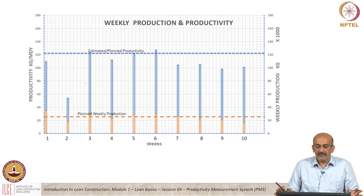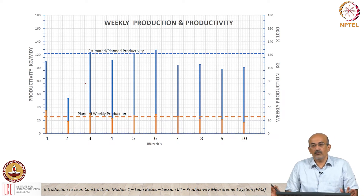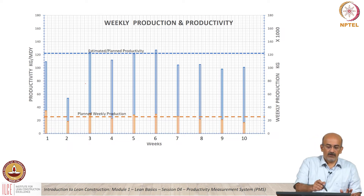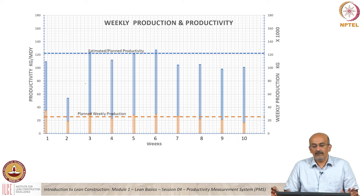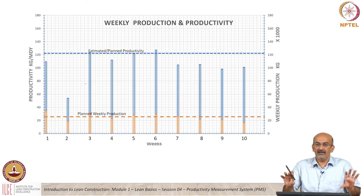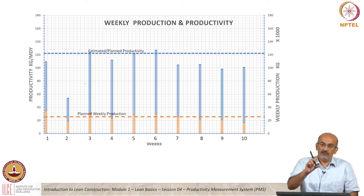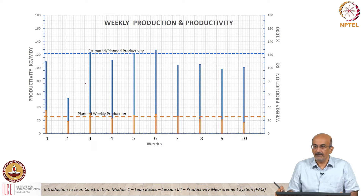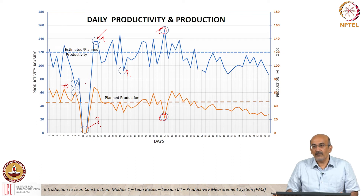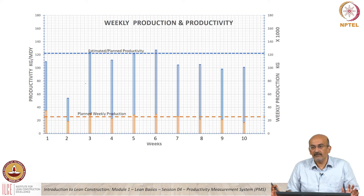This is the same data converted into a weekly production and productivity graph. What is the first thing that stands out? The production level is more or less getting stabilized on a week-to-week basis. There is also less fluctuation in productivity because all these daily fluctuations have now been absorbed into the weekly view. The variations are less, which means detailed information has reduced, but from a weekly perspective it is visible what is happening — this is like an over-based run rate measurement versus ball-by-ball.